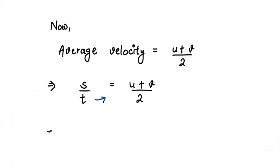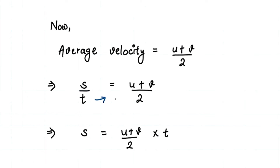Now if we move time to that side, it gets multiplied, and we get s equals u plus v divided by 2, times t. When time moved to that side it became multiplied, and done — we have derived our equation of motion.